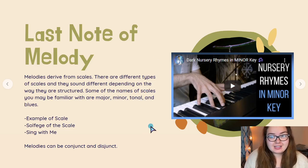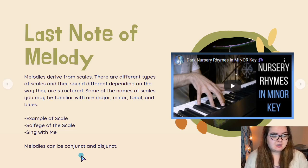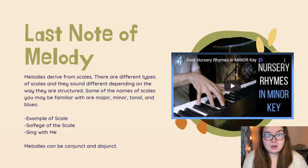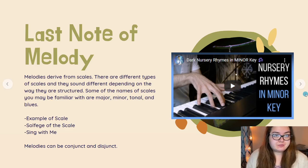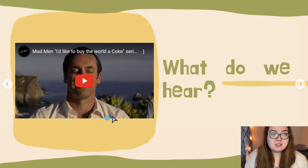Melodies can be conjunct and disjunct. Conjunct meaning that they are pleasant, and disjunct meaning that they kind of sound harsh. Take a look at this video — I want you to think about what you hear. Go ahead and watch it.